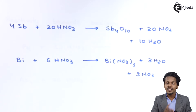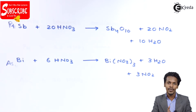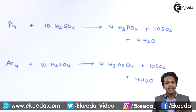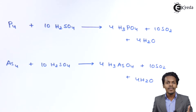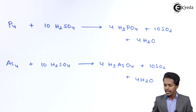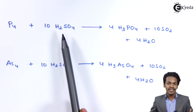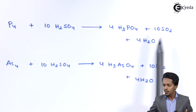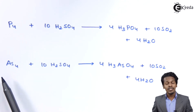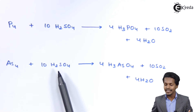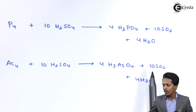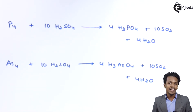What would be the reaction of group 15 elements with sulphuric acid? Nitrogen is not that reactive with oxidizing acids like HNO3 or H2SO4, so no reaction is mentioned for it. But phosphorus can easily react with hot and concentrated H2SO4 to produce H3PO4 (phosphoric acid) along with 10 moles of SO2 and water as a by-product. When arsenic is reacted with 10 moles of hot concentrated H2SO4, it produces H3AsO4 (arsenic acid) along with 10 moles of SO2 and H2O as a by-product.